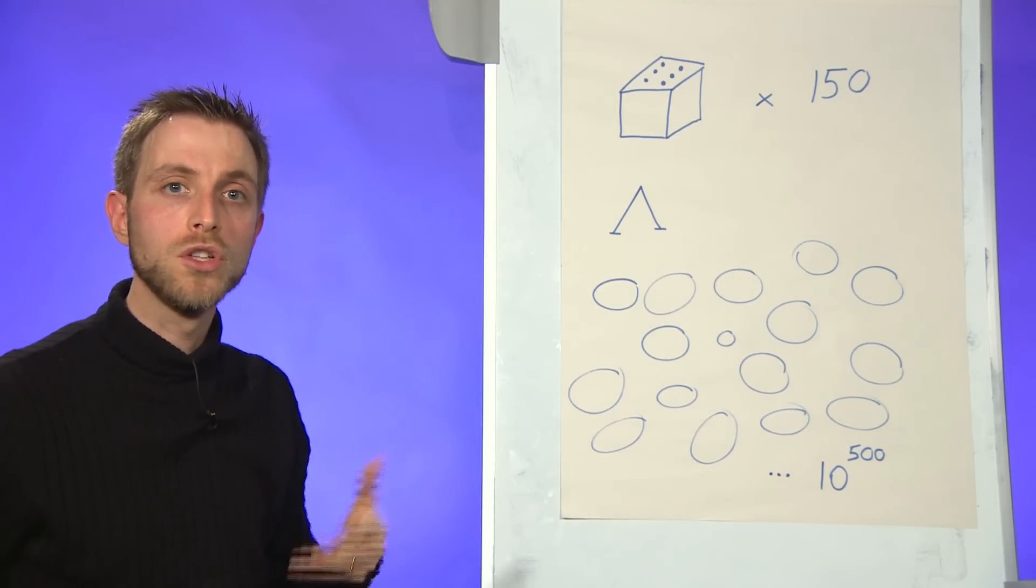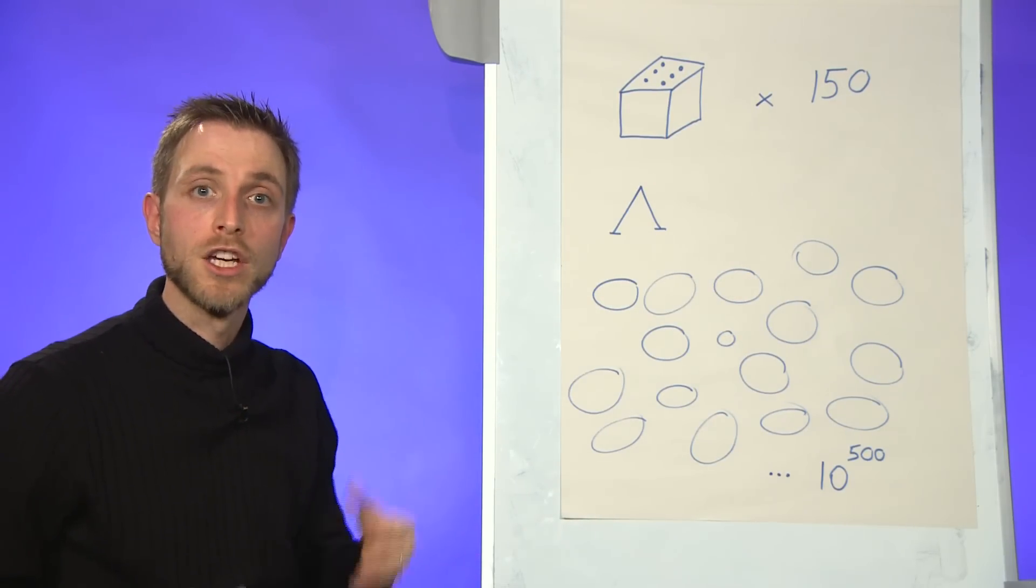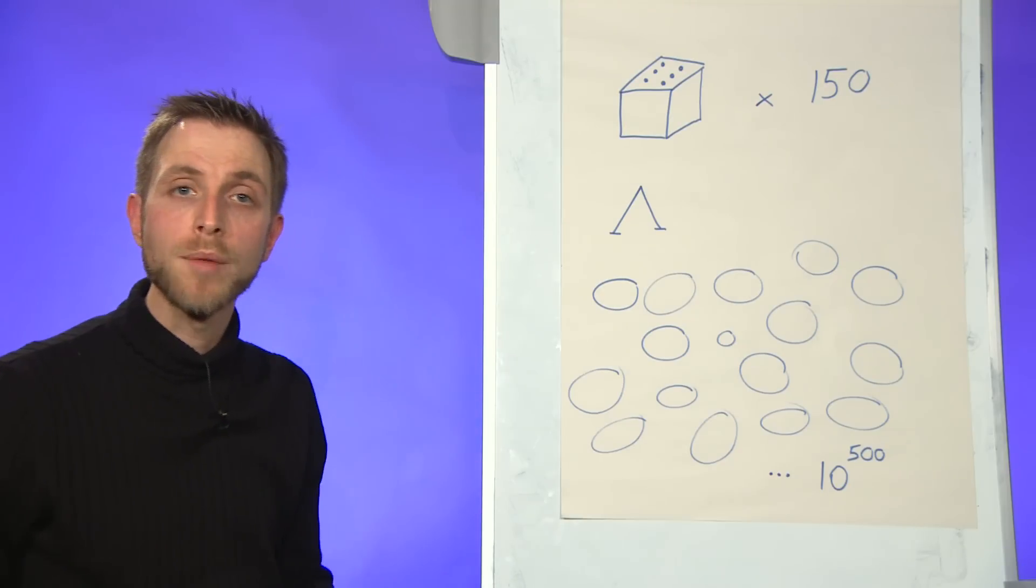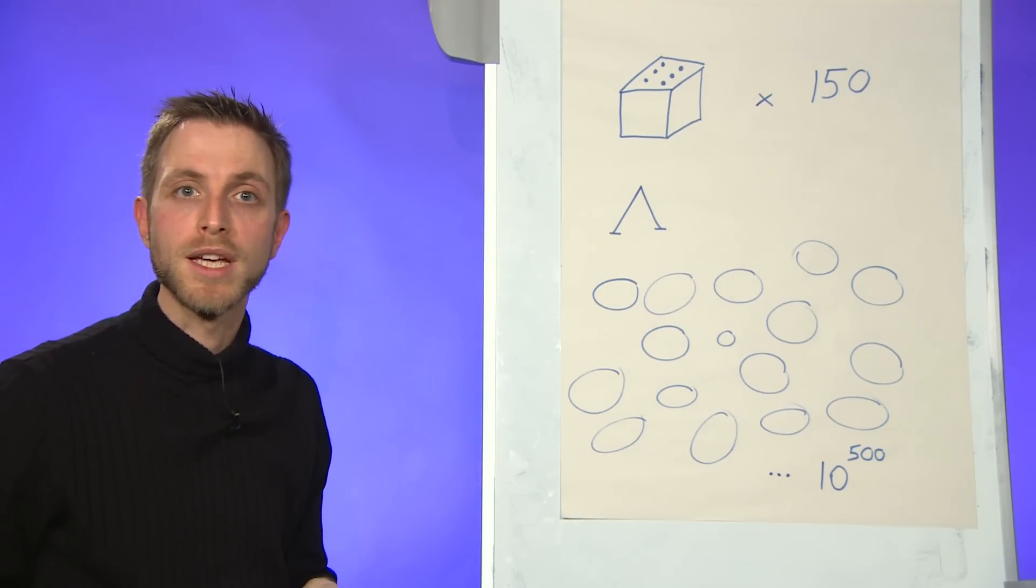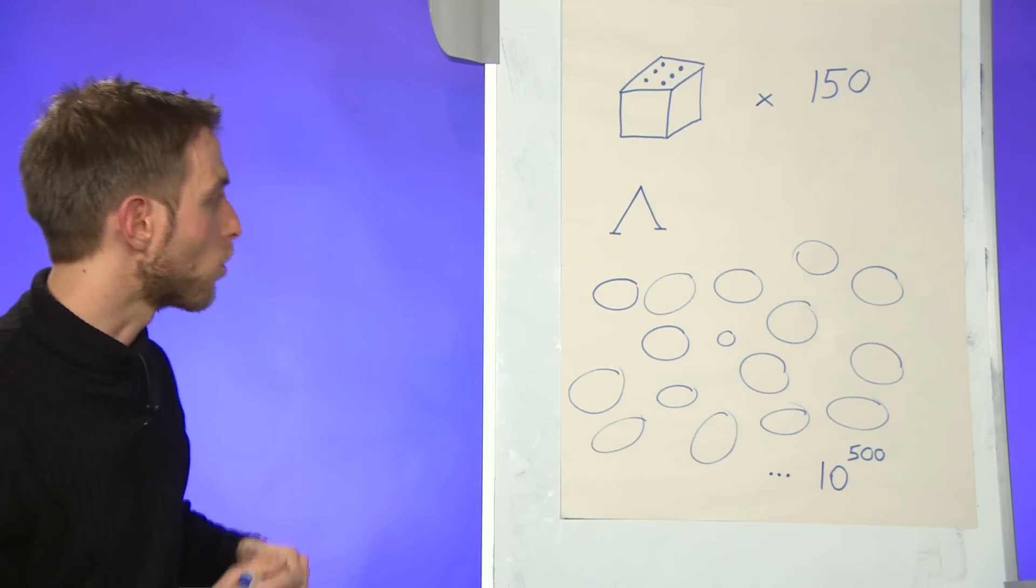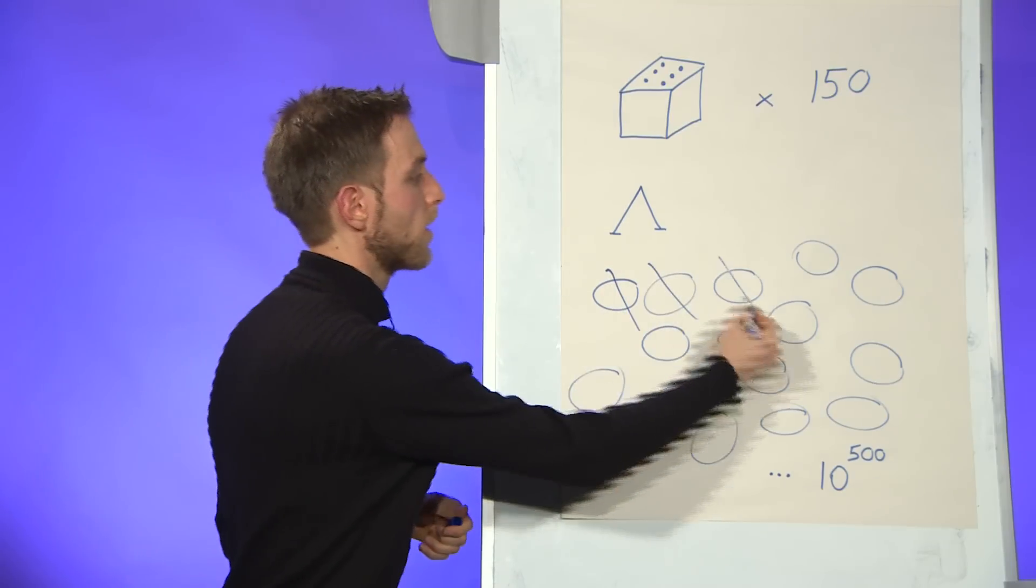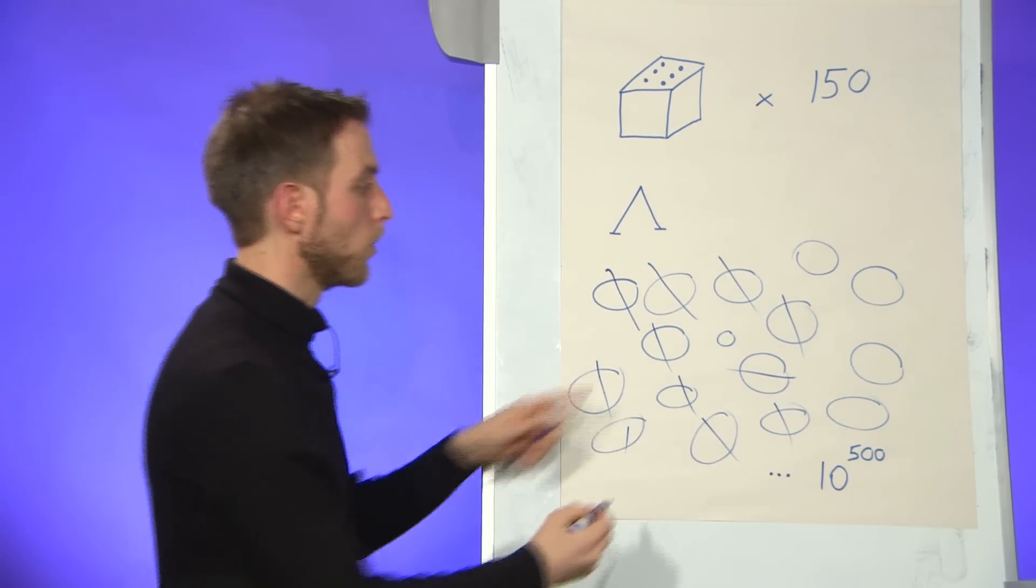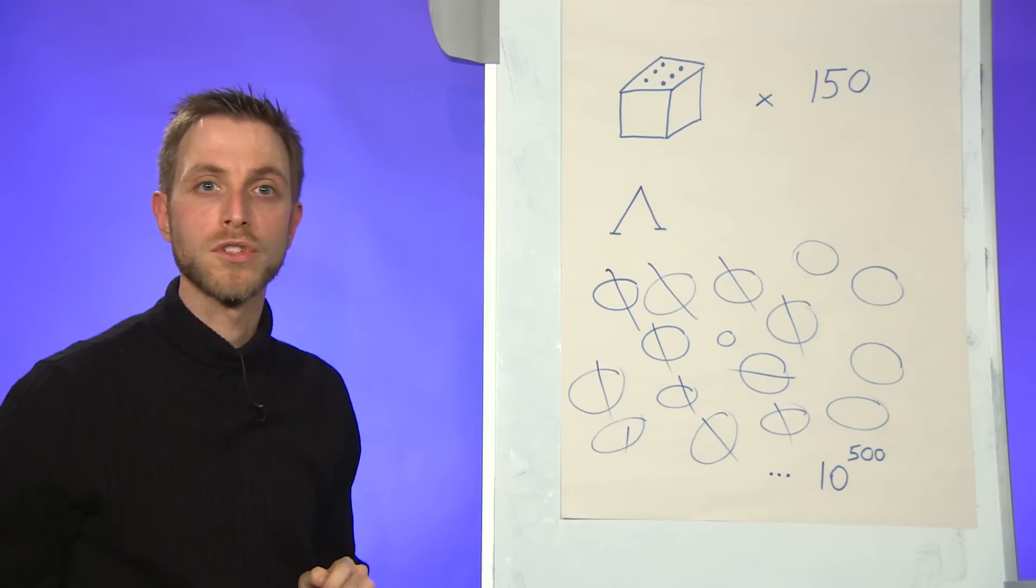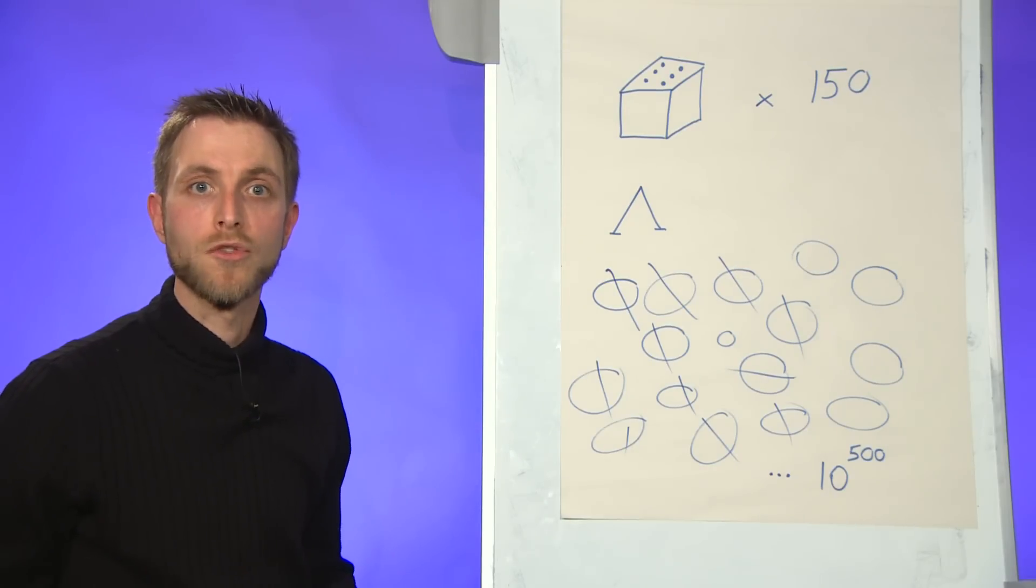And so only those universes which have a value of the cosmological constant that's just right for us will be the ones in which we, as human beings, can possibly live. And therefore, all of the other universes are impossibilities, and we are left to live in the one improbably fine-tuned universe that we observe. That is the anthropic principle.